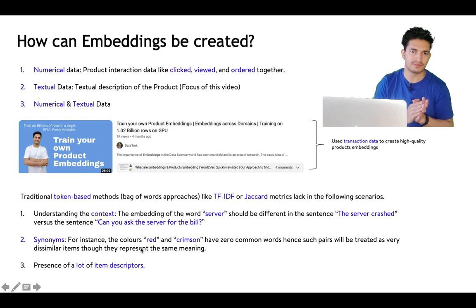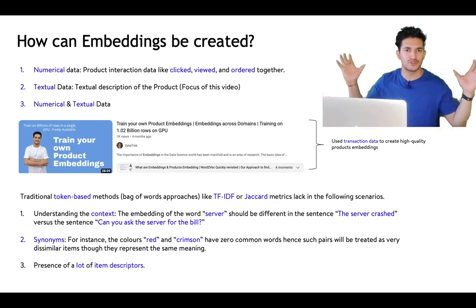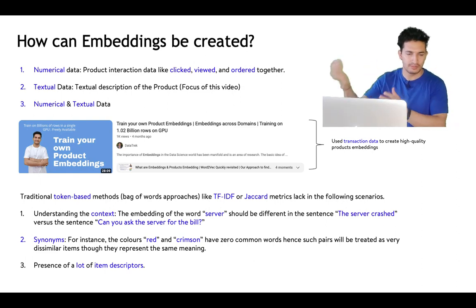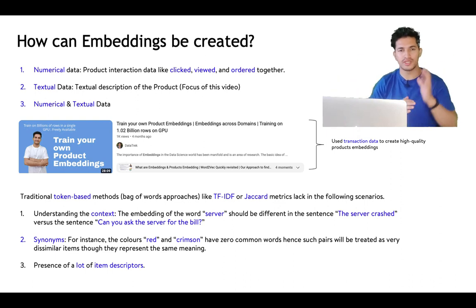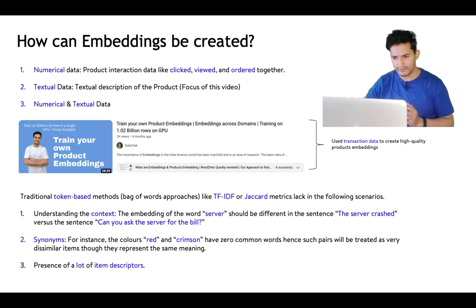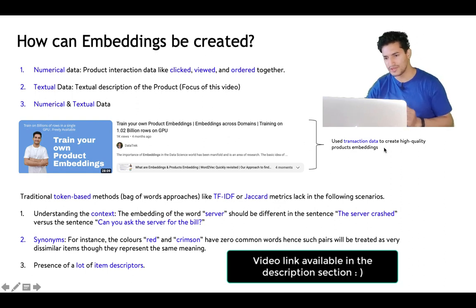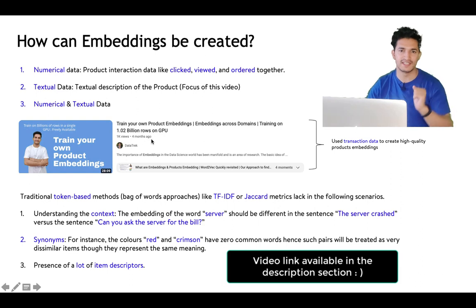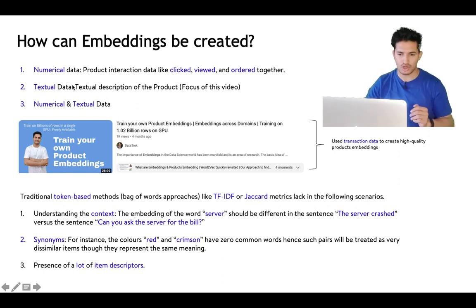Third, both numerical and textual data can be used together — along with image data — to produce multi-modal embeddings. I already have a video in my channel on how to use transaction data to create high-quality product embeddings, trained on 1.02 billion rows on a single GPU freely available in a Kaggle notebook.